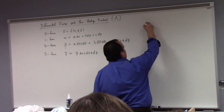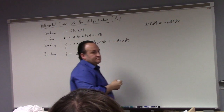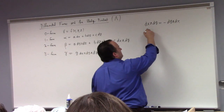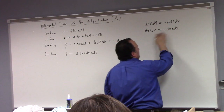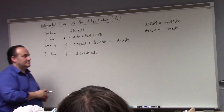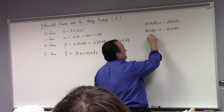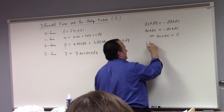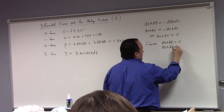The basic rules for the wedge product are as follows. For instance, dx wedge dy equals minus dy wedge dx. This is, by definition, how the wedge product works. So what does this say about dx wedge dx? By the same rule, it equals minus dx wedge dx. If something equals minus itself, it's zero. So dx wedge dx equals zero. Likewise, dy wedge dy equals zero, and dz wedge dz equals zero.